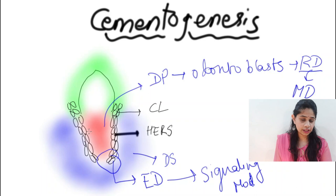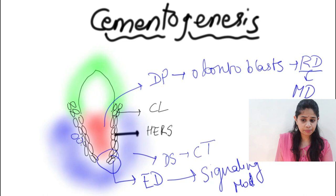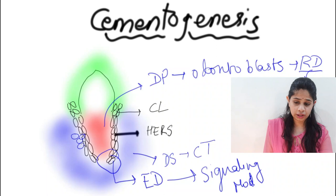These connective tissue cells proliferate towards the epithelial aspect and cause invasion within the epithelial root sheath. This further leads to the disintegration of the epithelial root sheath in certain areas.